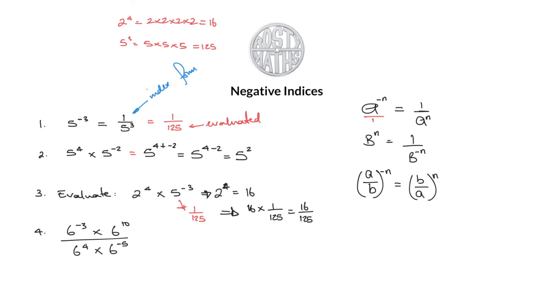So what we've actually got is 16 times one over 125, which is 16 over 125, and this is now finished. It's evaluated. It's done. There are no common factors to simplify that. That is done. Okay, right, and finally to finish off the video for today.